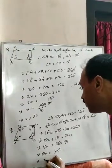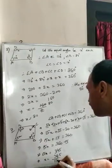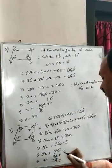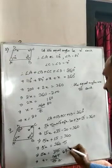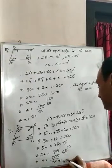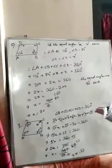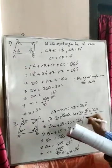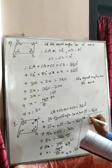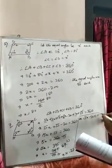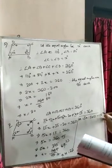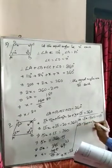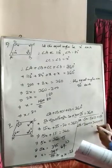X = 345 ÷ 15 = 23. Now we find all four angles: angle A = 5X = 5 × 23 = 115 degrees. Angle B = 3X + 10 = 3 × 23 + 10 = 69 + 10 = 79 degrees.